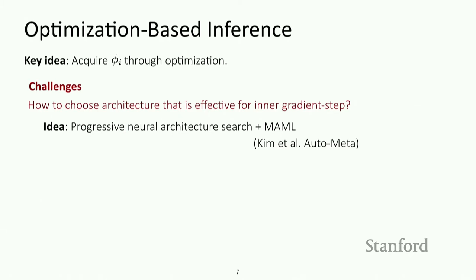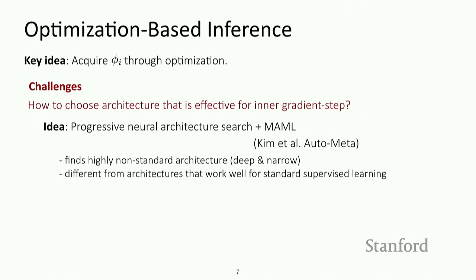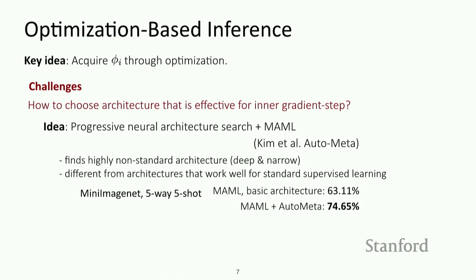One idea is to do neural architecture search on the MAML architecture so that meta-learning works well. They called this auto-meta, in the sense that you're doing both AutoML and meta-learning. One interesting finding was that highly non-standard architectures were actually effective for MAML, in contrast to their effectiveness for standard supervised learning problems. For example, they found that deep and narrow architectures tend to work well. Taking mini-ImageNet with the basic architecture, which reaches around 63% performance, MAML with this kind of optimized architecture saw an 11% absolute improvement, which is pretty substantial.